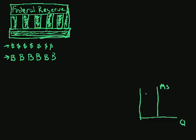Here's the quantity of the money. And when it changes the money supply, it can then change this interest rate either upwards or downwards like this.